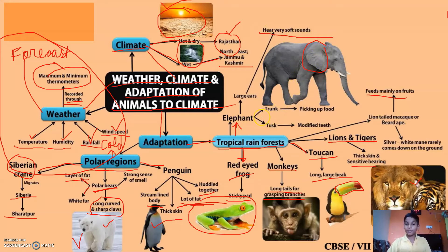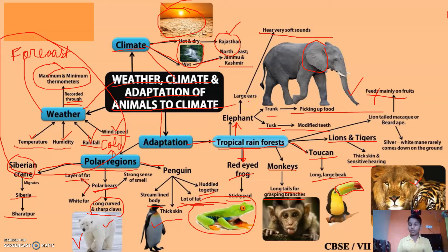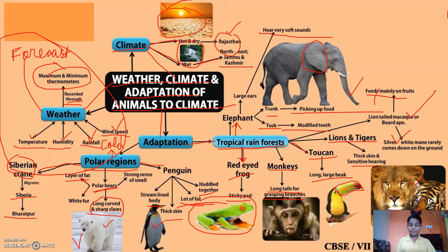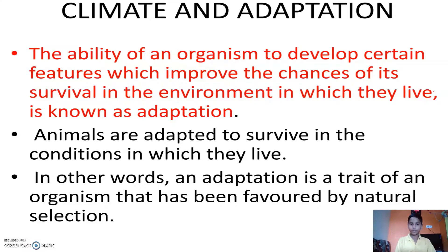Elephants have very large ears and can hear very soft sounds. They have a trunk — as you can see in the picture — which they use to pick up food. They also have modified teeth. I hope all this is clear so far.